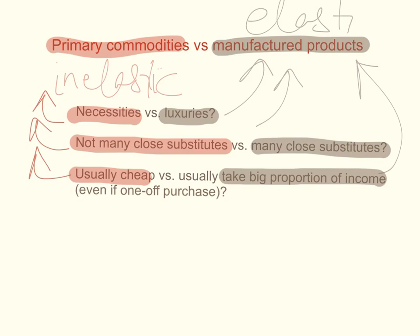So primary commodities often have price inelastic demand, while manufactured products often have price elastic demand.